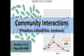Hello again. Today we are going to talk about the second section of chapter 14, from pages 405 to 408. This section is talking about community interactions like predation, competition, and symbiosis.